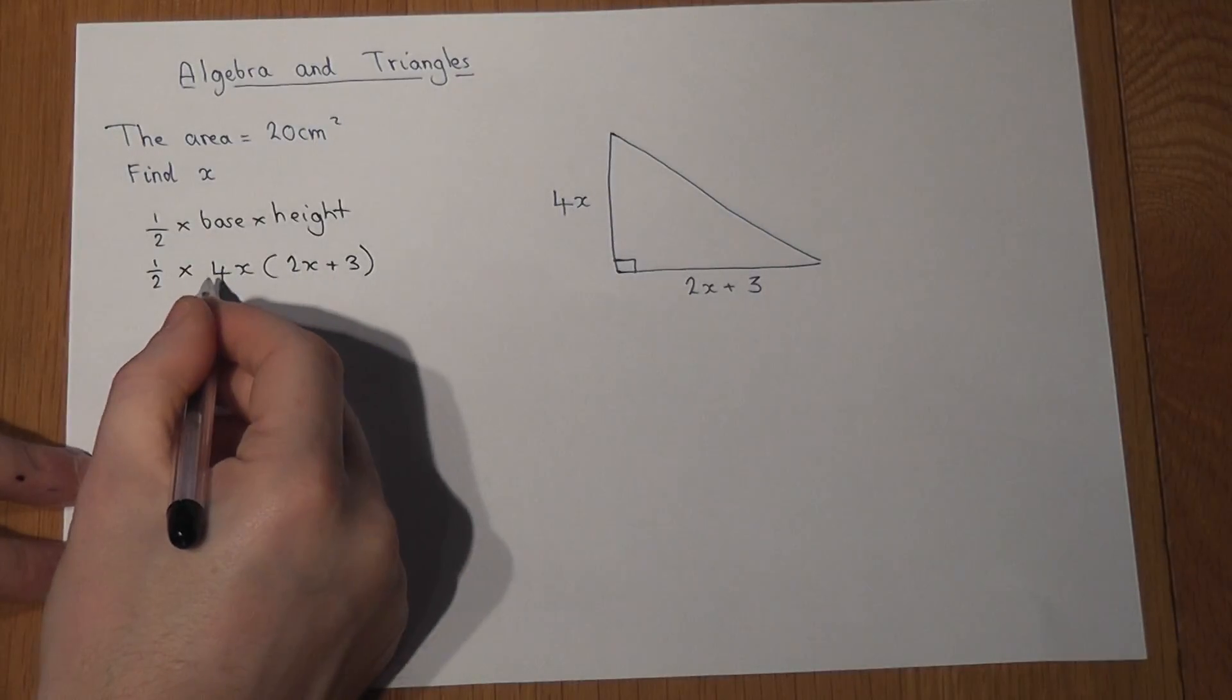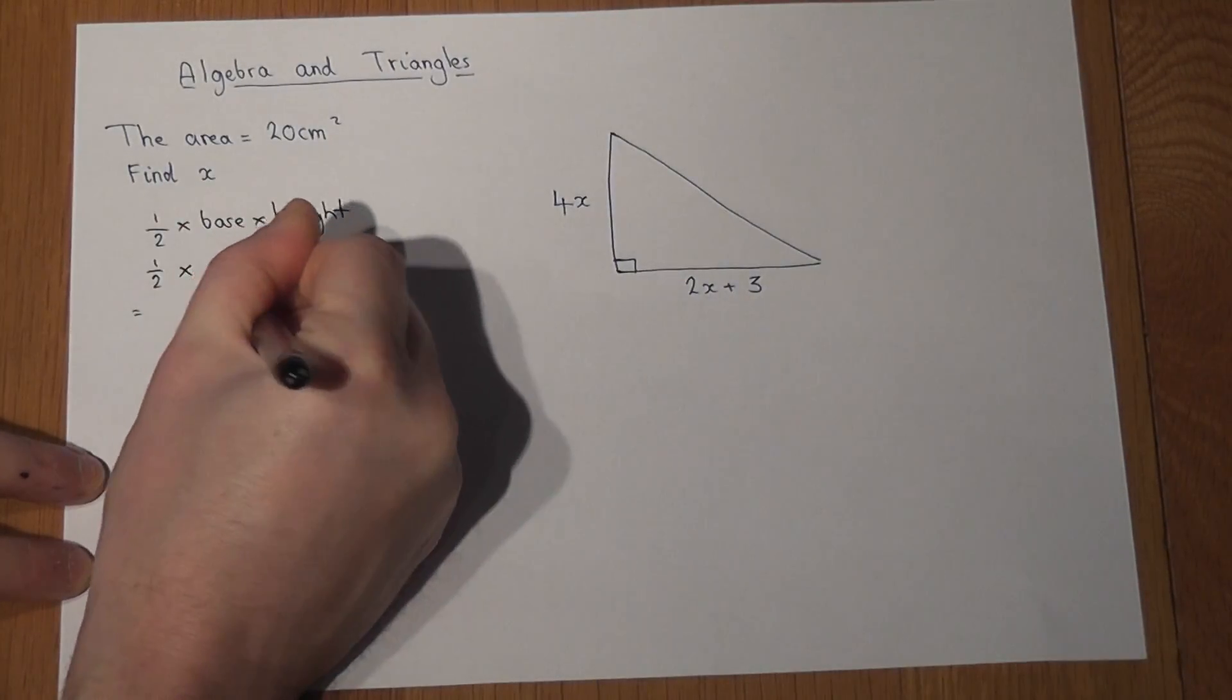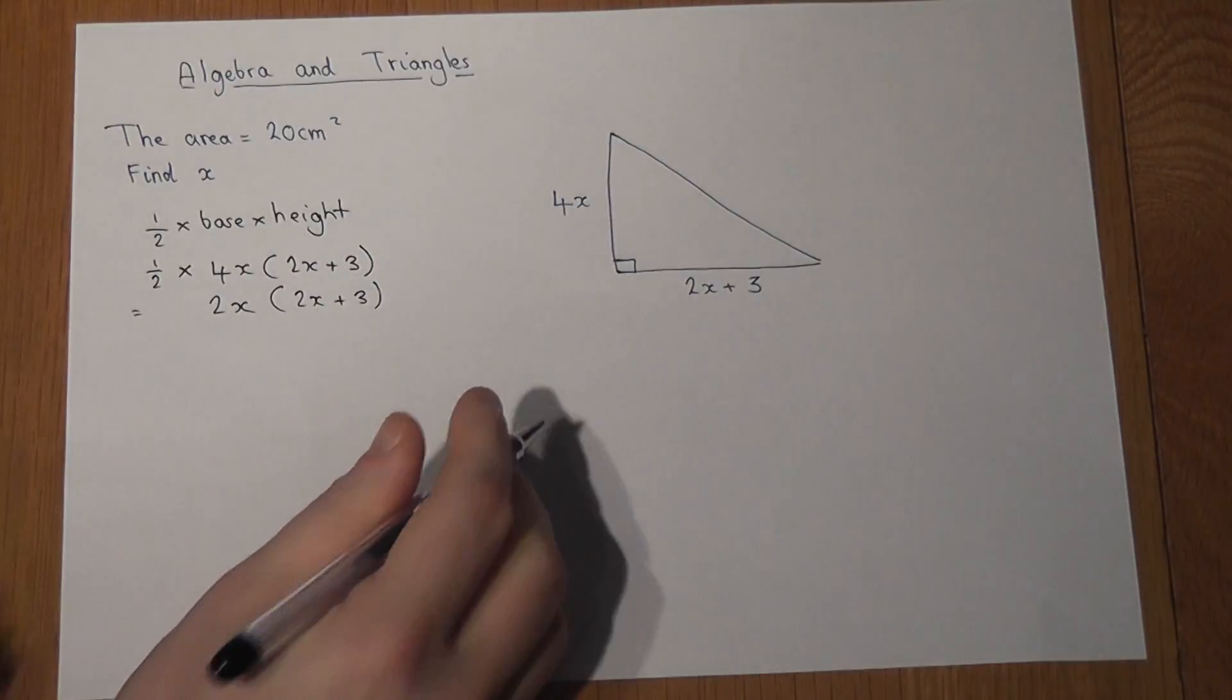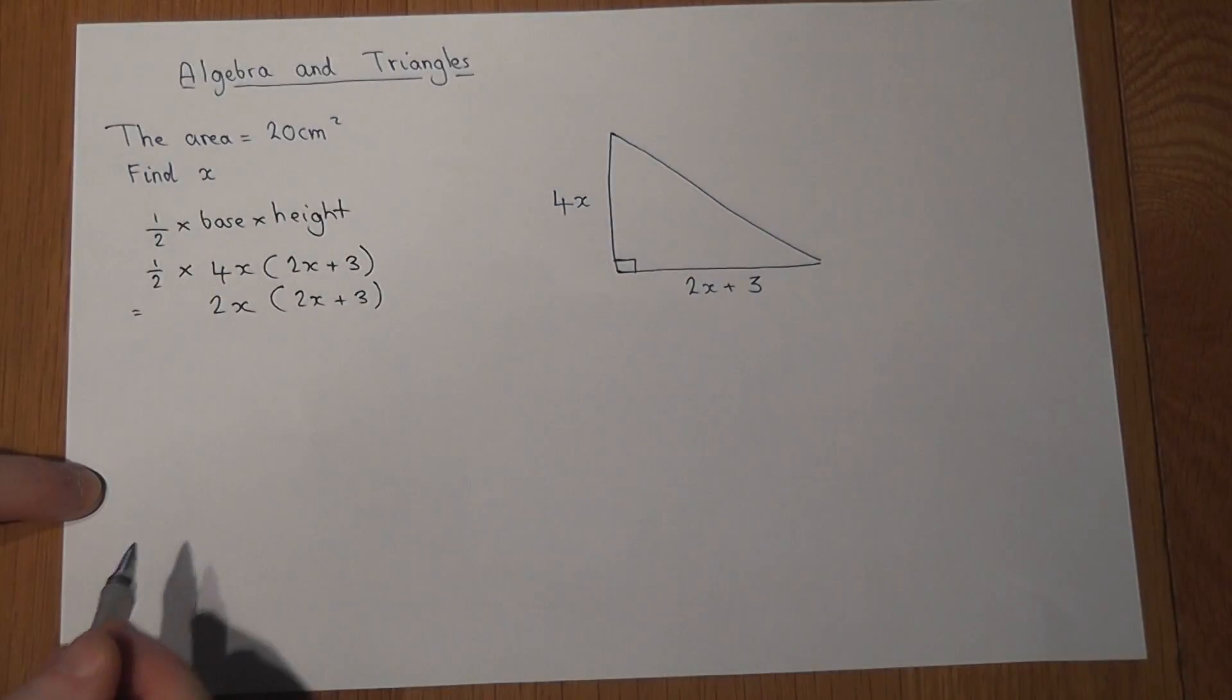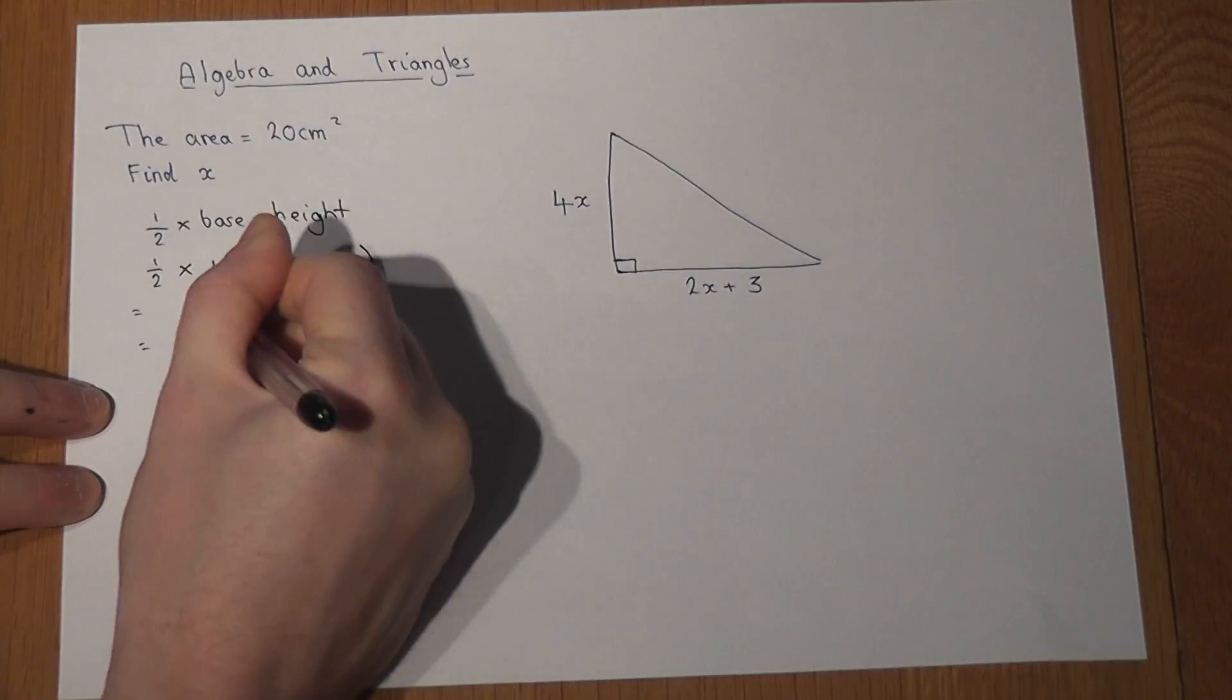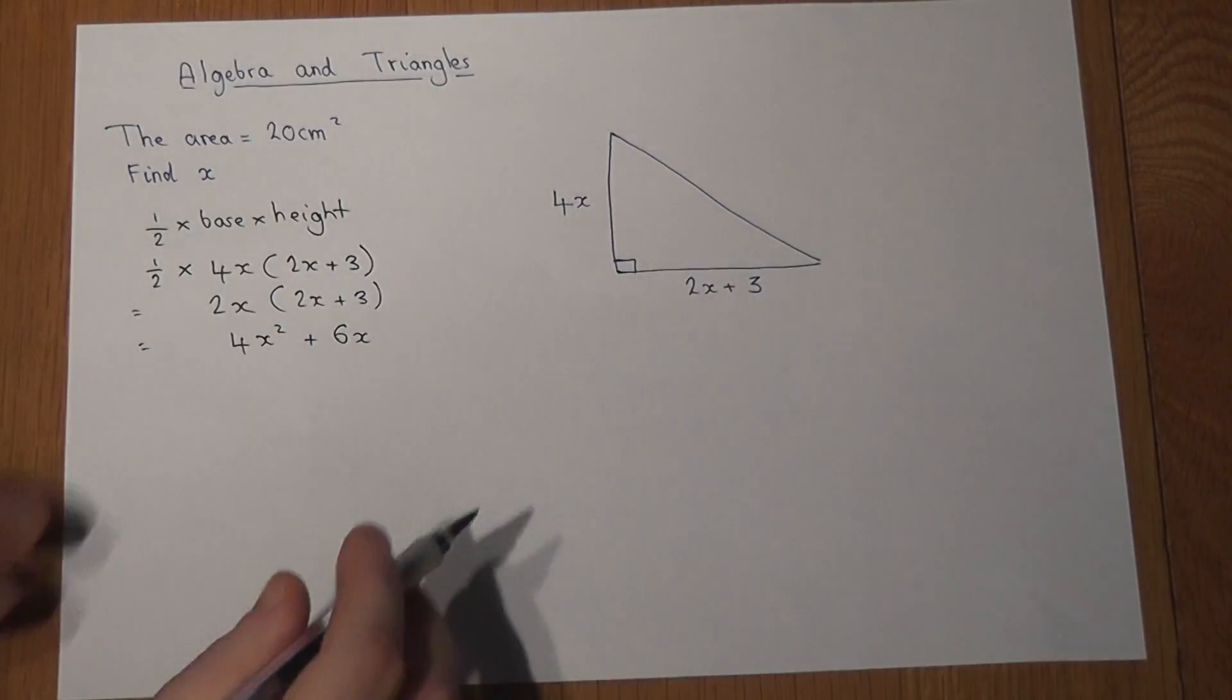This can be simplified in different ways, but a half of 4x is just 2x. So this is the same as 2x times 2x plus 3. I just halved the 4x. I can then expand it. 2x times 2x is 4x squared, and 2x times 3 is 6x. So this is an expression for the area of the triangle.